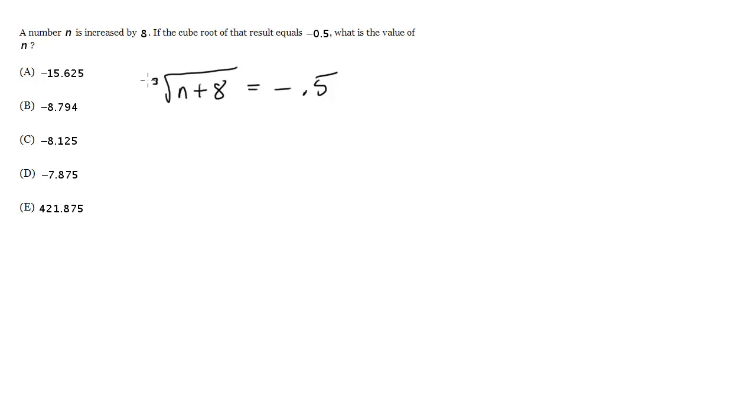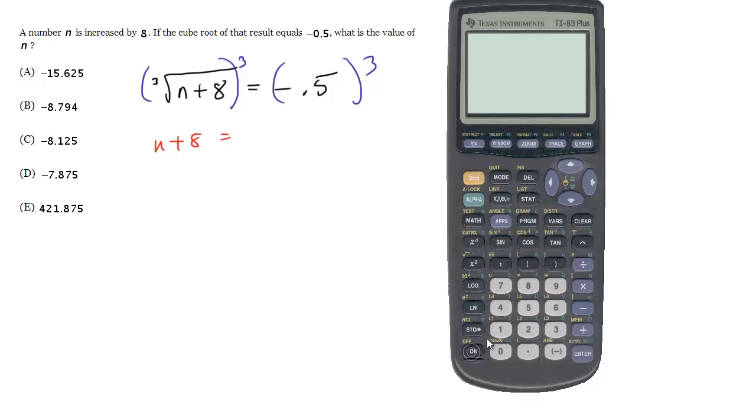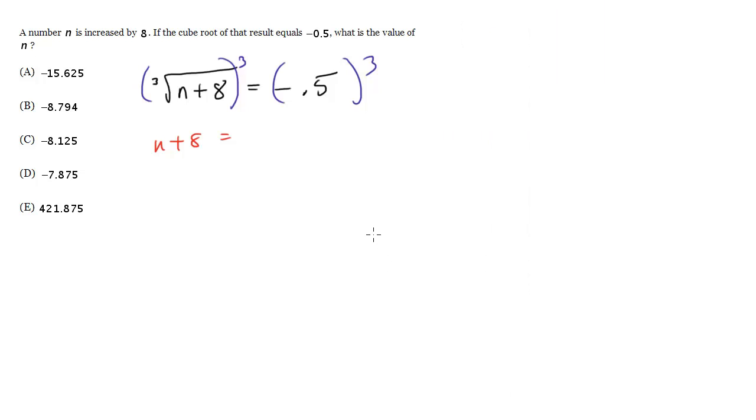So let's go ahead and solve this. We can start off by cubing both sides to get rid of the cube root. We do that and we get n plus 8 equals, so now we've got to do negative 0.5 cubed, negative 0.5 to the 3, negative 1.25.